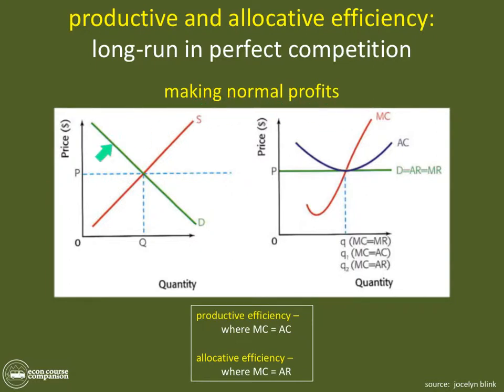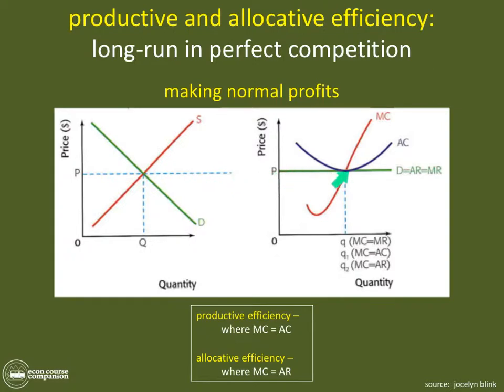How do we derive this curve? It's pretty simple. Here is the industry curve — demand, supply, and price. Firms in a perfectly competitive market are price takers, so the price is perfectly elastic.